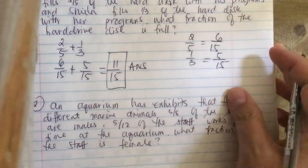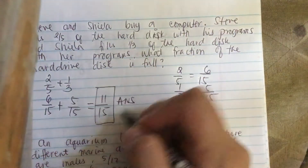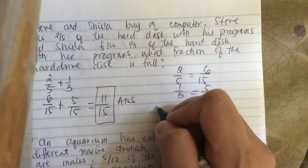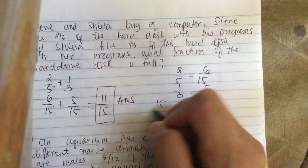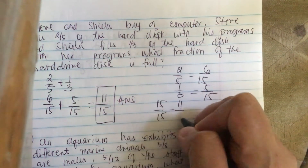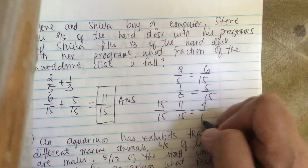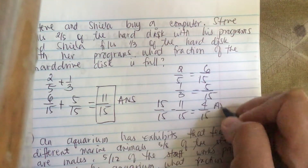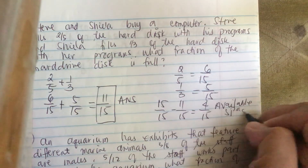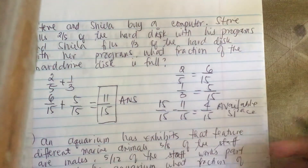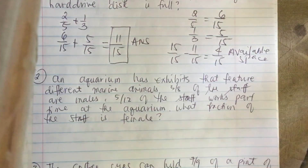If you want to know the available space: 15 over 15 minus 11 over 15 is equal to 4 over 15, which is the available space. But they did not ask for this, so it's just side work.